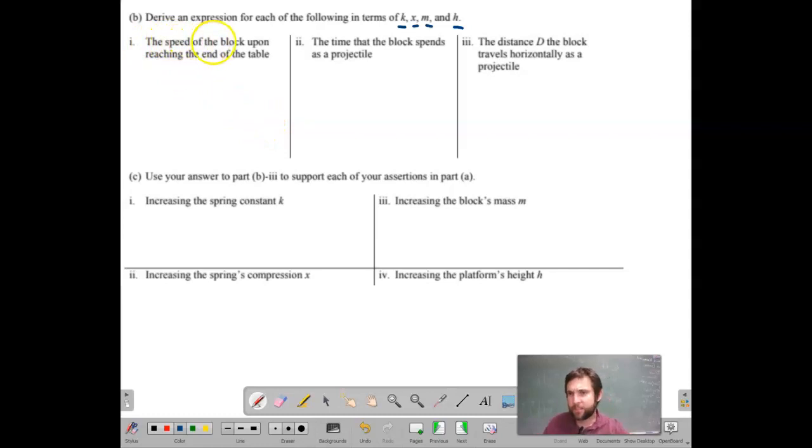All right. So we need to get the speed of the block upon reaching the table. A lot of students ask me, how can I be better at deriving? Deriving just means to do it. Show the steps to. So don't just give me a blank answer. Show the steps to get there. I always say the first step in deriving an equation is to find an equation on the equation sheet and then make it match the situation.